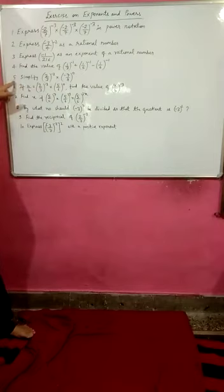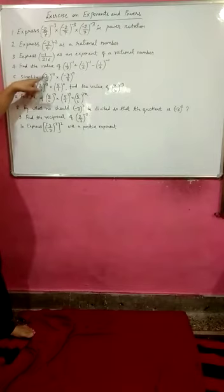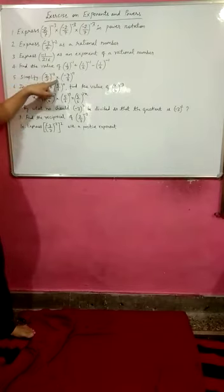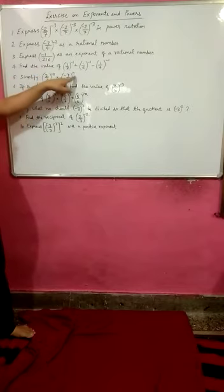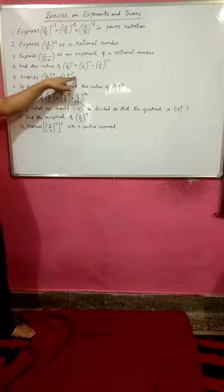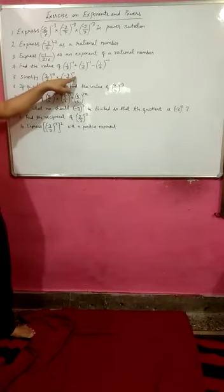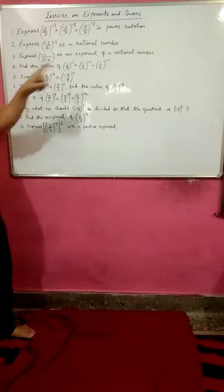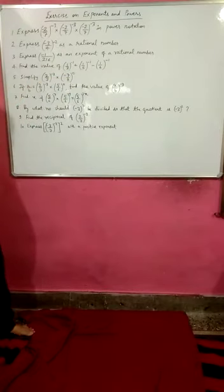Next question: simplify (2/3)^-2 multiplied by (-7/8)^0. I am reminding you all, whenever any rational number has power 0, its value is 1.